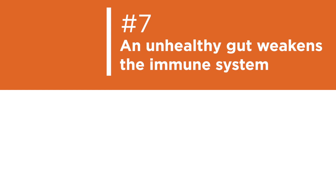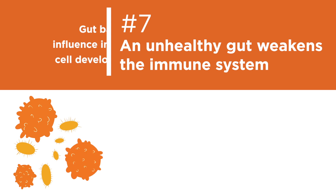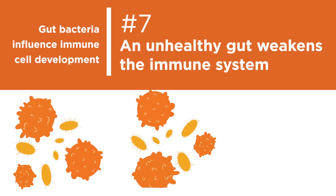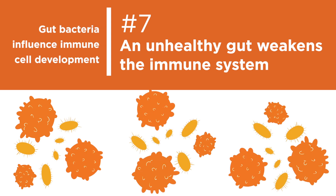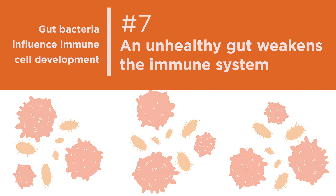Number seven: unhealthy gut. A large part of your immune system is in your gut. Certain gut bacteria influence the development of various immune system cells. Scientists are investigating the specific mechanisms by which the gut affects immunity.